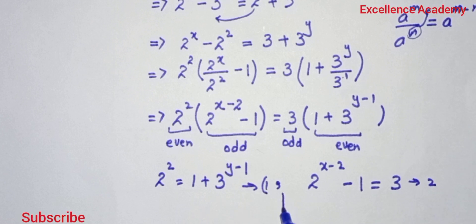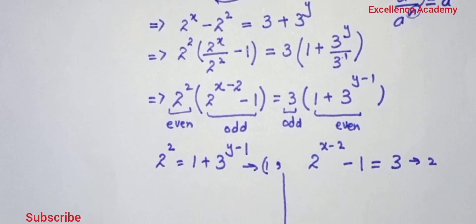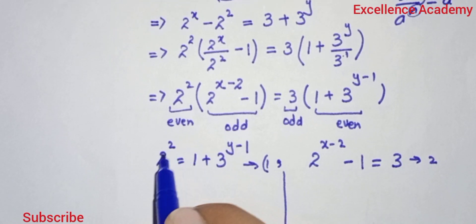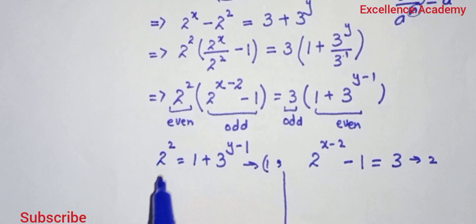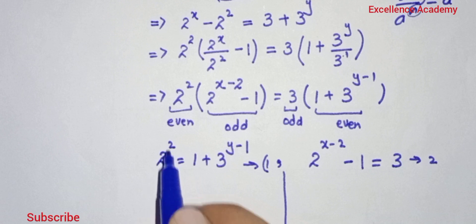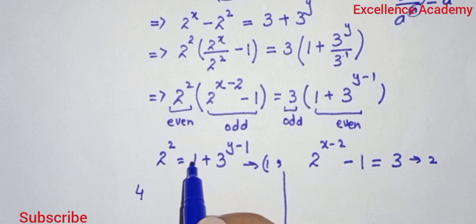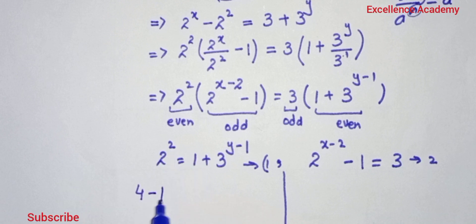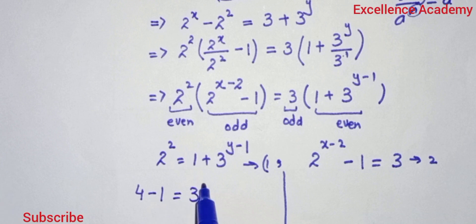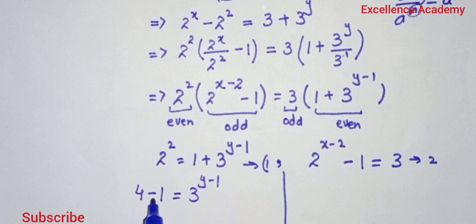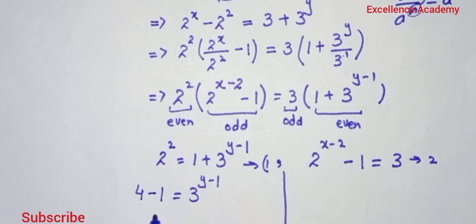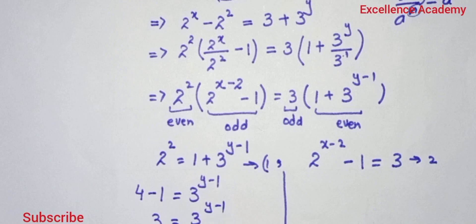First we solve Equation 1. Shift 1 to the left hand side: 2^2 minus 1 equals 3^(y minus 1). Since 2^2 equals 4, subtracting 1 gives us 3 equals 3^(y minus 1).